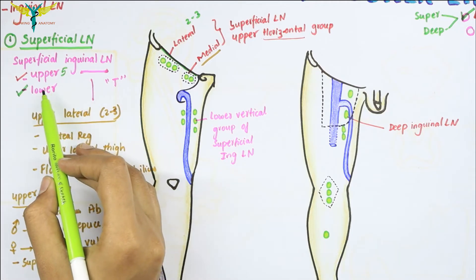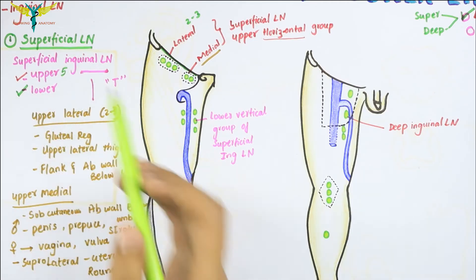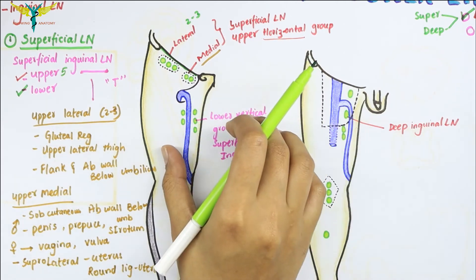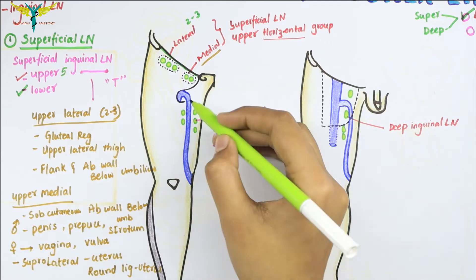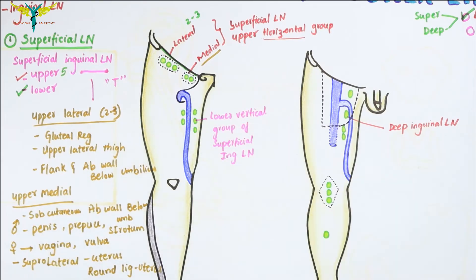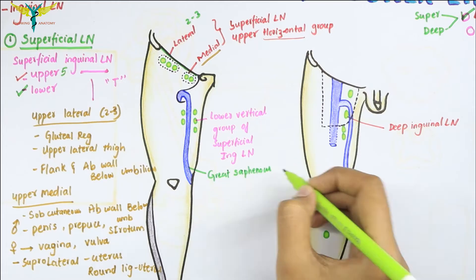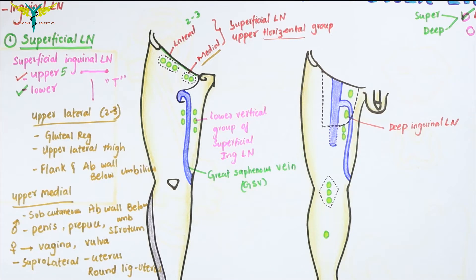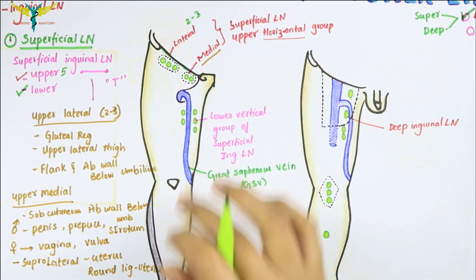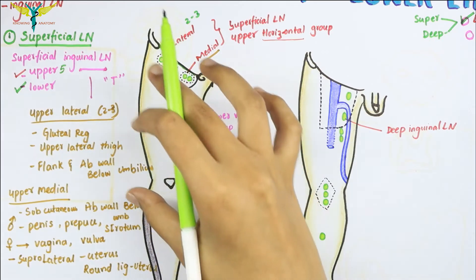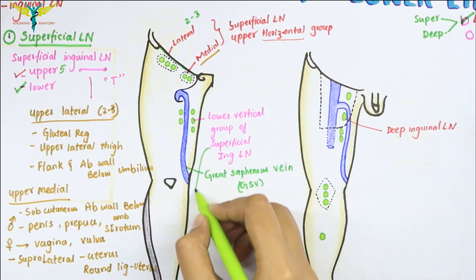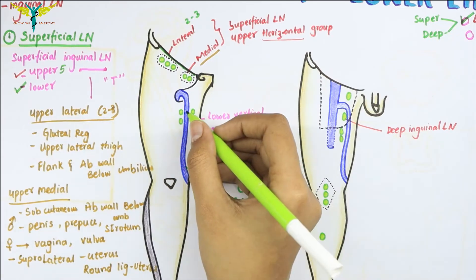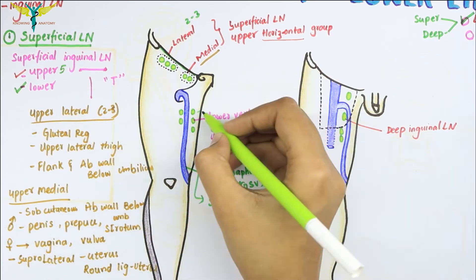The second group of superficial inguinal lymph nodes is the lower group, which lies vertically. These are placed along both sides of the terminal part of the great saphenous vein. This lower vertical group of lymph nodes receives lymph from the skin and the fascia of most of the lower limb, except from the buttock region. These nodes consist of 4 to 5 lymph nodes.